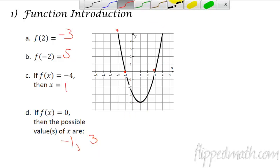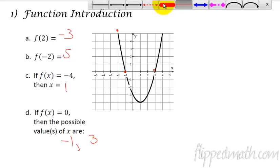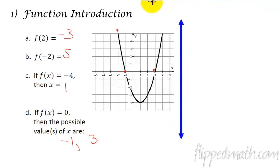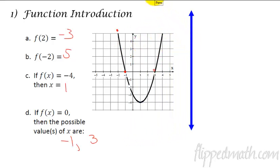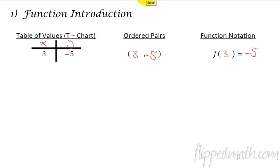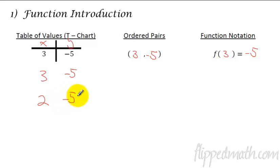One more thing about this lesson. We did talk about whether a graph or a set of table values is a function or not, and you find that out by using the vertical line test — just remember that, vertical line test. Or you check all the x values and make sure that the x values only match up with one specific y value. So an example would be, if we had another x value of 3 in this chart, it would absolutely have to be negative 5 in order for it to be a function. But every single x value must map to one and only one y value.